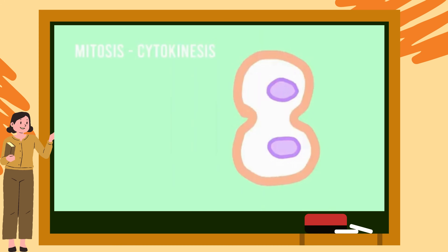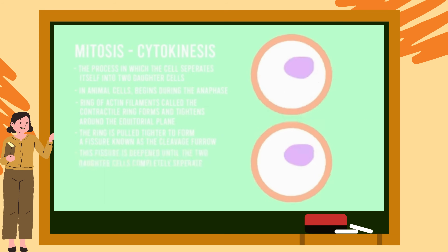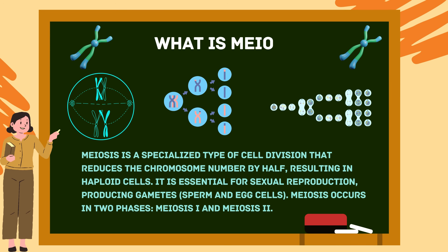Now let's move on to cytokinesis. The second portion of the mitotic phase, cytokinesis, is the process in which the cell physically separates itself into two daughter cells. For animal cells, cytokinesis begins during anaphase where a ring of actin filaments called a contractile ring forms and tightens around the equatorial plane. This ring is pulled tighter and tighter by motor proteins to form a structure known as the cleavage furrow, until the two daughter cells completely separate from each other.